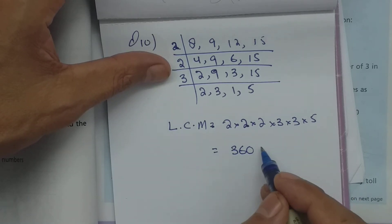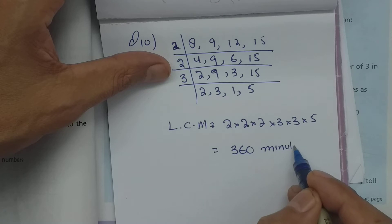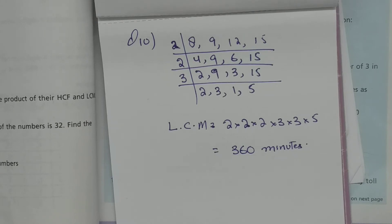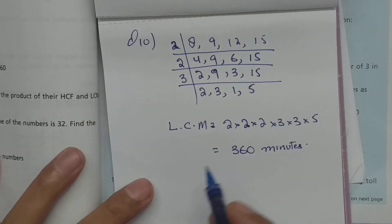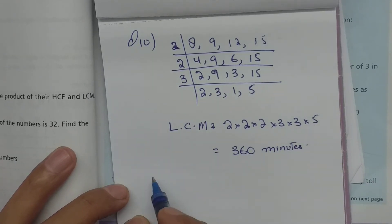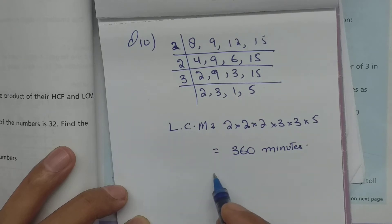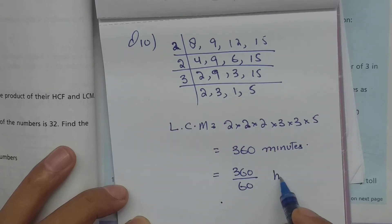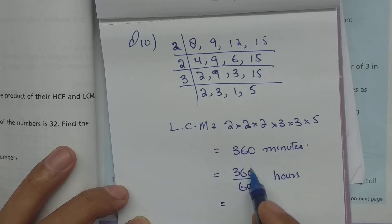When you multiply all these numbers: two two is four, four two is eight, eight three is twenty-four, twenty-four five is one twenty, one twenty multiply by three is 360. LCM = 360 minutes۔ اب 360 minutes کو hours میں convert کریں گے: 360 divided by 60 = 6 hours۔